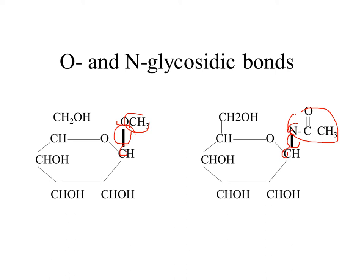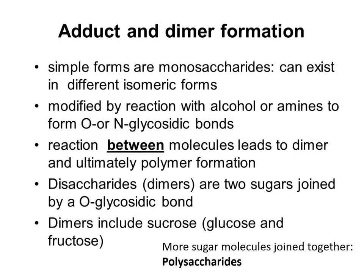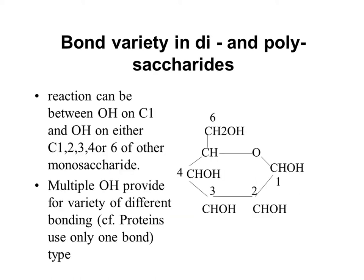In both cases, an adduct is said to be formed. The simplest form of sugars are monosaccharides, which contain only one sugar molecule. However, two sugar molecules can react with one another to form a dimer or a disaccharide. A disaccharide is an example of an adduct joined by an O-glycosidic bond. An example of a disaccharide is sucrose, formed by the joining of glucose and fructose.